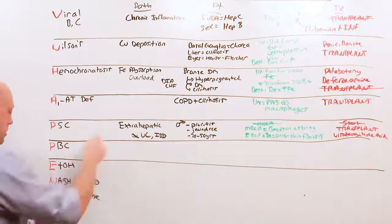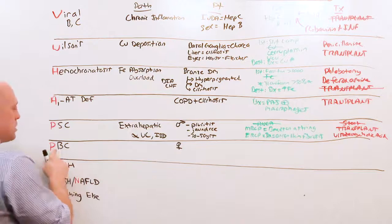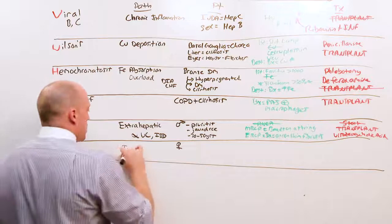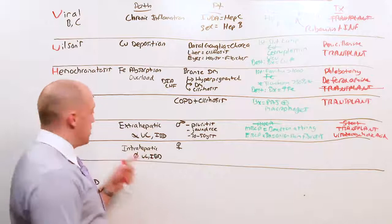PBC, chicks. PBC, primary biliary cirrhosis. B is for bitches. B is for bitches, women. Women are subtle. They're coy. Intrahepatic ducts. No association with UC, autoimmune disease. I told you I was going to offend you, but this works. B is for bitches. S is for sons of bitches.